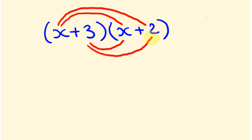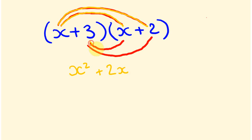It's really helpful to draw arrows to keep track. Starting with x: x times x is x squared. Then x times 2 is positive 2x. Now moving to the 3: 3 times x is 3x, and 3 times 2 is 6. So we've expanded everything out.